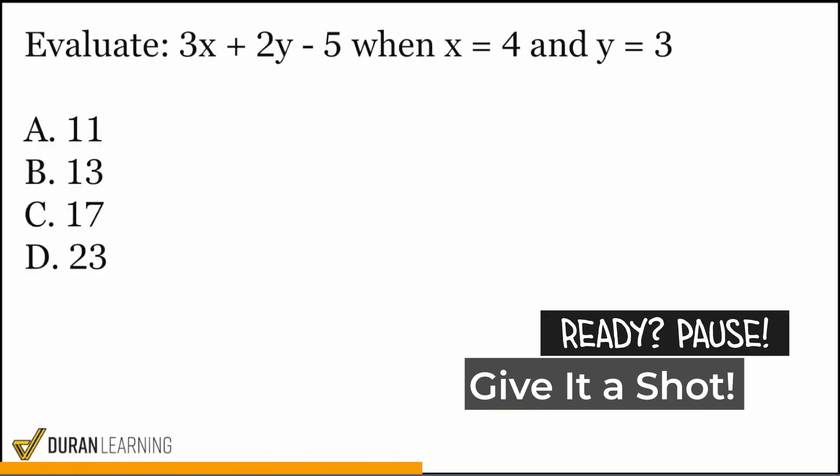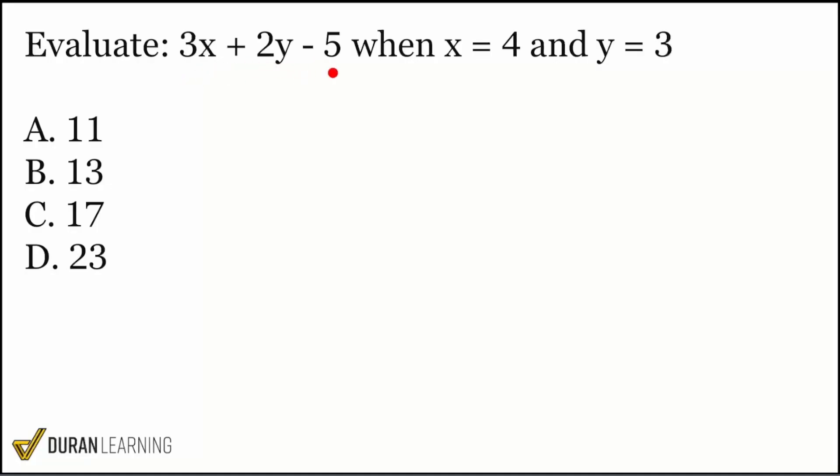All right, let's take care of this question where it says evaluate this expression: 3X plus 2Y minus 5, when X equals 4 and Y equals 3. So what this means is the first thing we want to do is, hey look, X equals 4. I'll replace X with 4. And then over here, Y is 3. I'll just go ahead and replace Y with 3. That's all I'll do at first. And what that gives me is 3 multiplied by 4 plus 2 multiplied by Y, which is 3, minus 5.